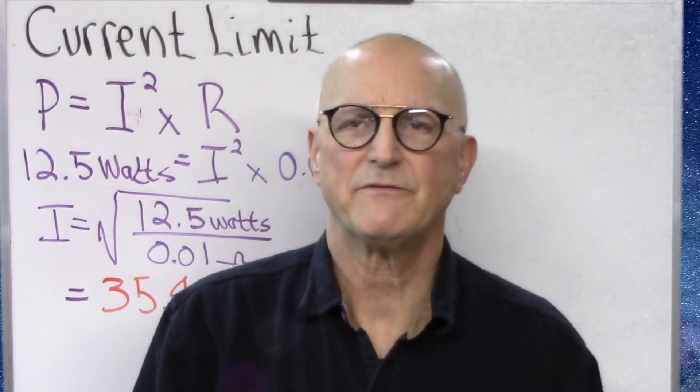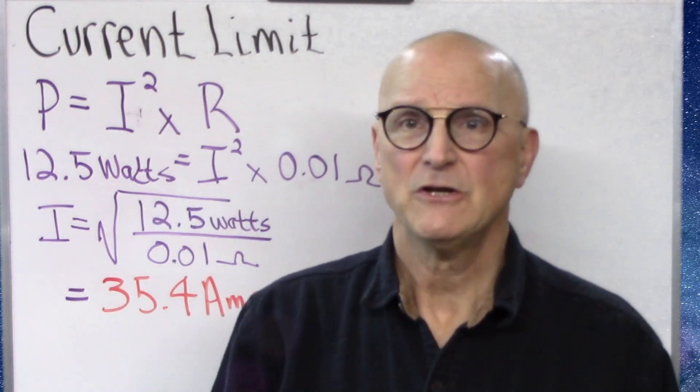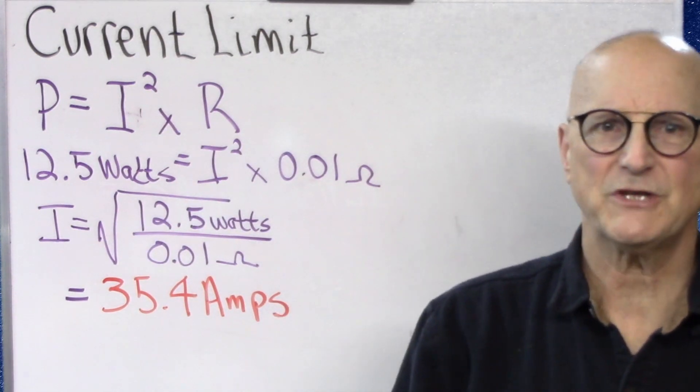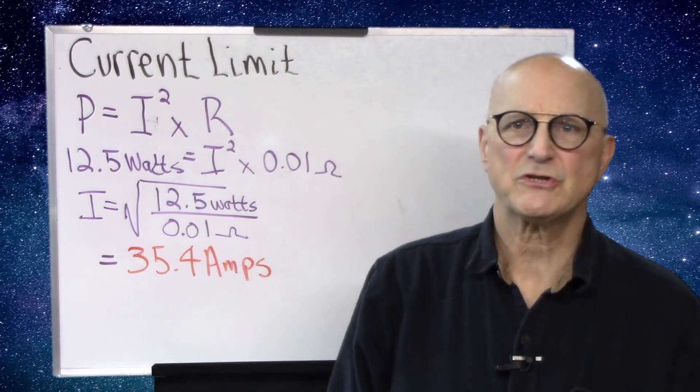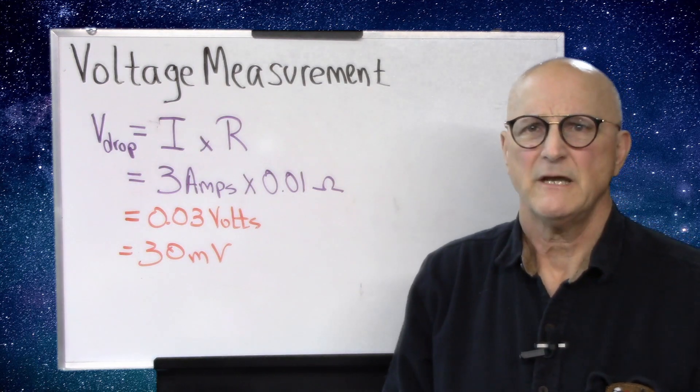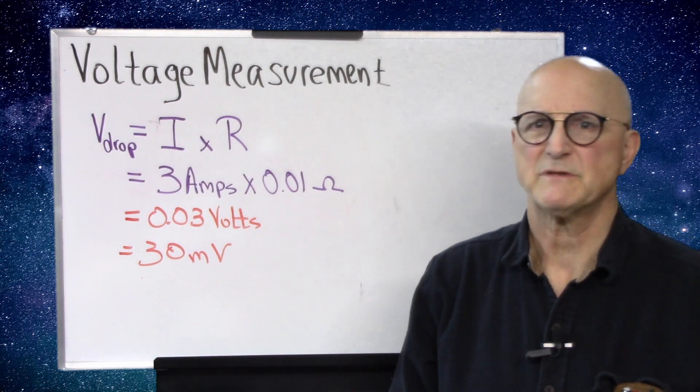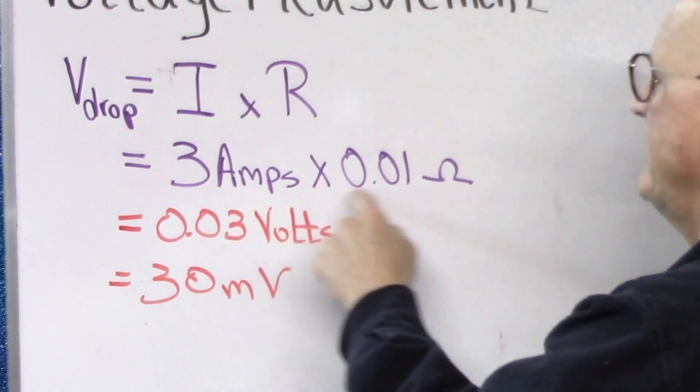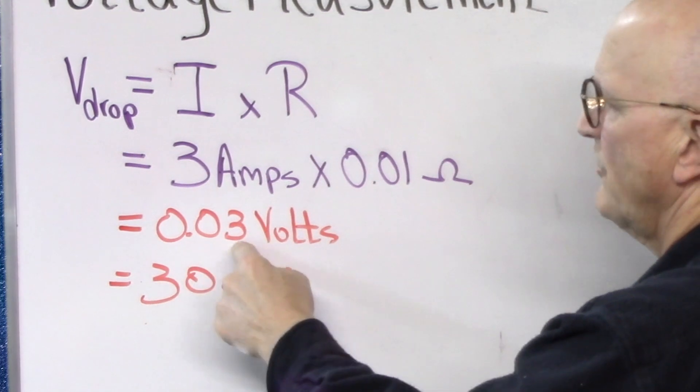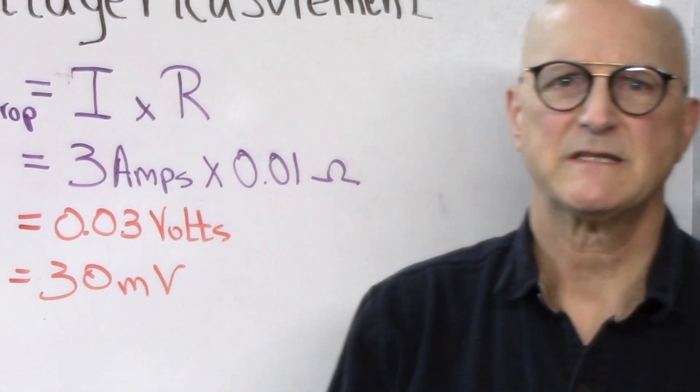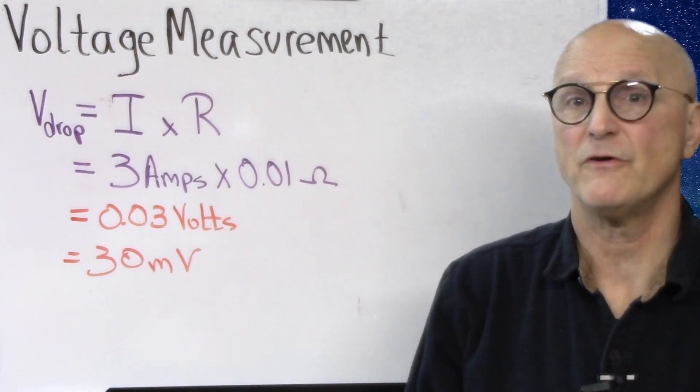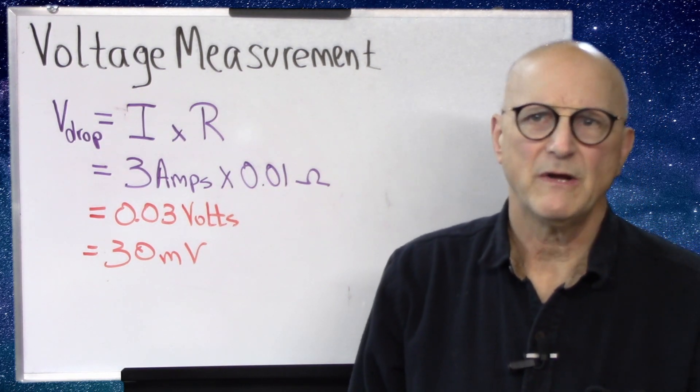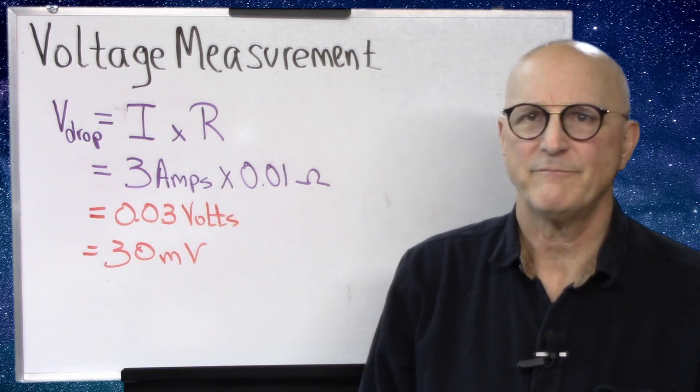I plan on using my Fluke 175 to measure the current, which is accurate to 1.17% on its 10 amp range. It will also give me 1 milliamp resolution. The next thing that we have to consider is what sort of voltage drop are we going to have to measure. So we have a 10 milliohm resistor and 3 amps passing through it. Well, we know that voltage is equal to the current times the resistance. So we have 3 amps times 0.01 ohms gives us 0.03 volts or 30 millivolts. I have decided to use my 10 mid-DVM to measure the voltage drop. According to its specifications, it will work just fine for this. It will give me 0.1 millivolt resolution with a 1.15% accuracy.